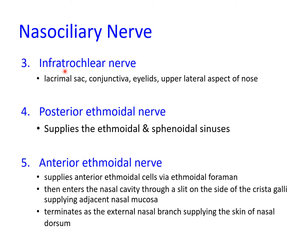The third branch is the infratrochlear nerve, analogous to the supratrochlear branch in the frontal division. The infratrochlear originates from the nasociliary branch of the ophthalmic and innervates the lacrimal sac, the conjunctiva, the eyelids mainly the lower eyelid, and the upper lateral part of the nose.